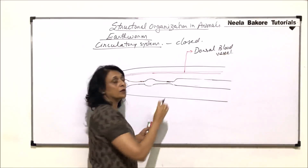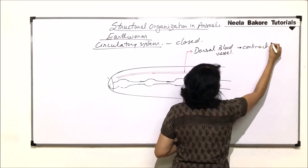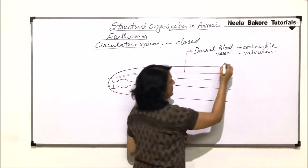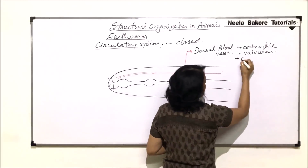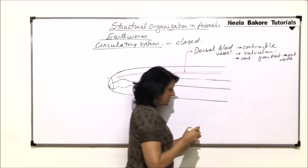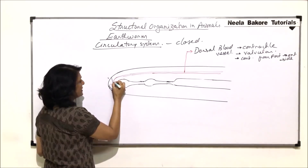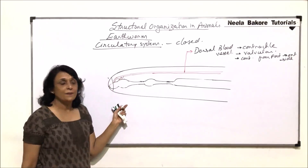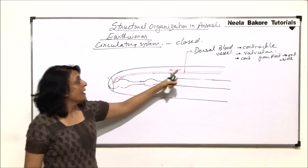The special features of this blood vessel: it is contractile, meaning it shows contractions, and it is valvular, meaning it has valves. It helps in conducting blood from the posterior to the anterior side, so contractions are from posterior to anterior. It brings blood from the posterior side and supplies it to the anterior part.